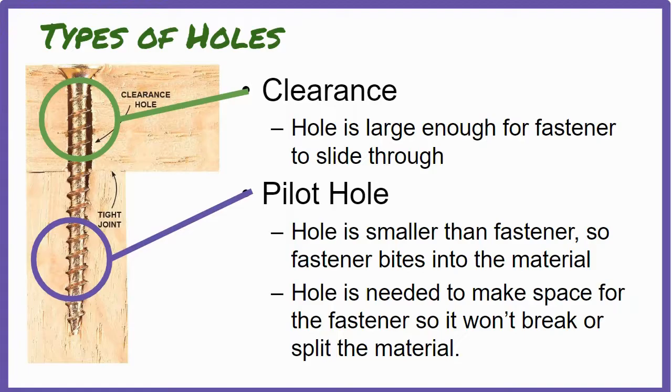In this way, the threads of the screw bite into the second piece and the screw is allowed to spin in the first piece. This causes the screw threads to pull the two pieces tightly together.